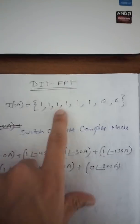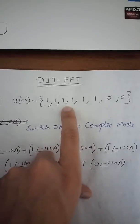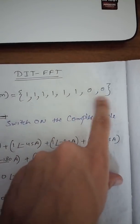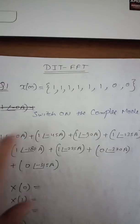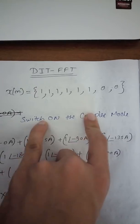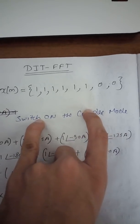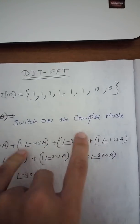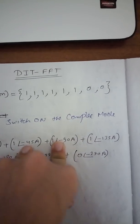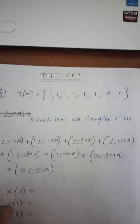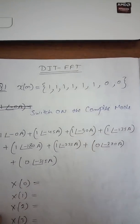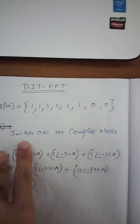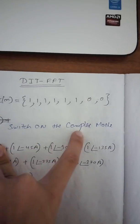This is our 8-point discrete sequence, which is six times one and two times zero. I am just taking a simple sequence to give you an example — otherwise you can take any sequence mentioned in your question.